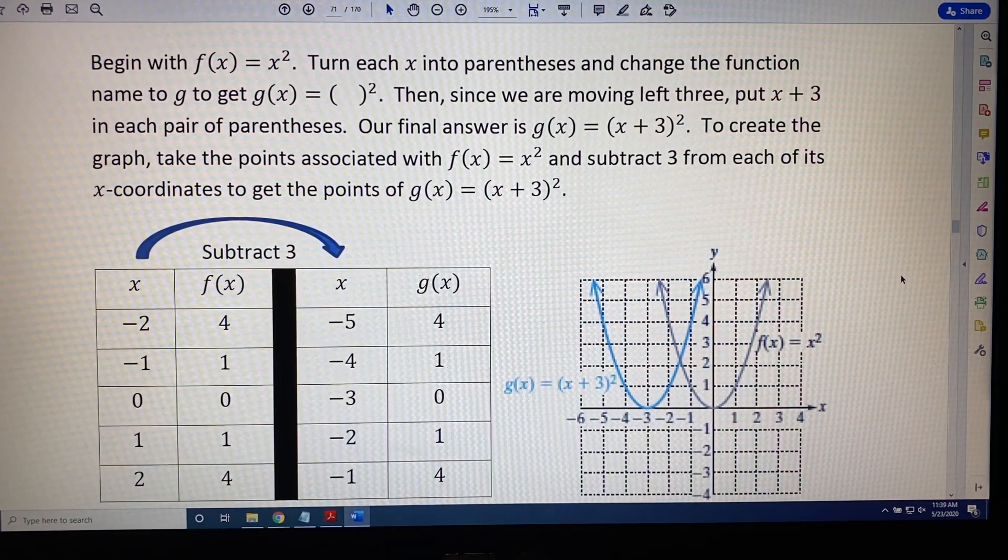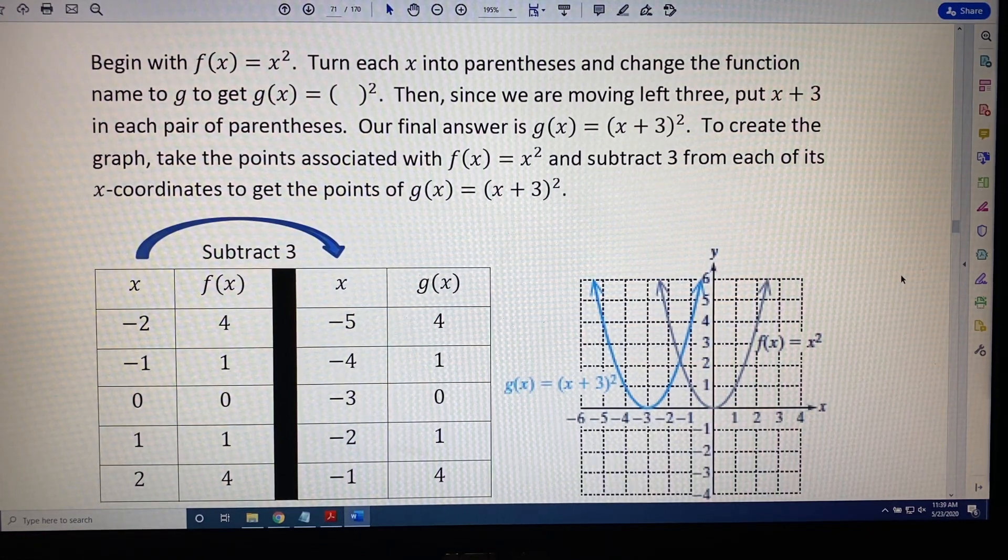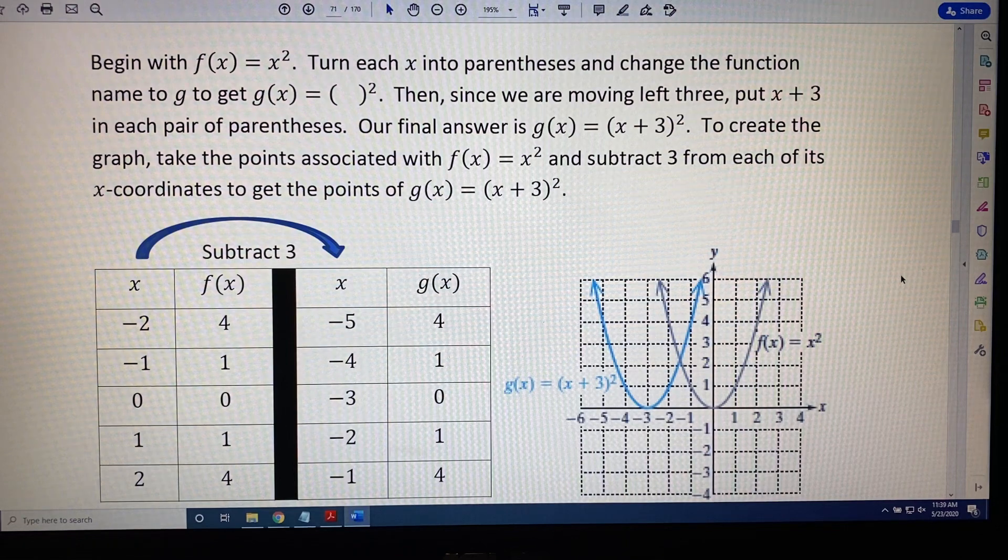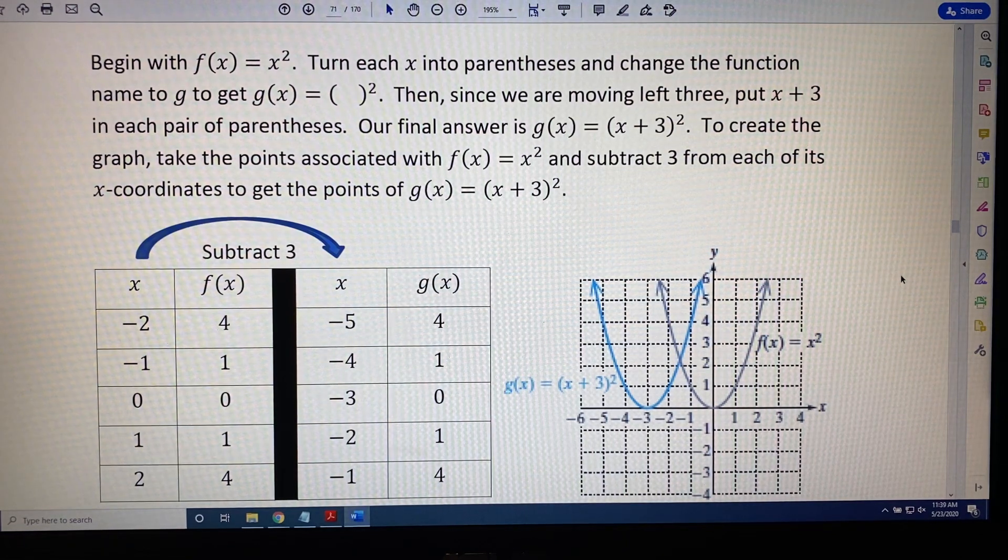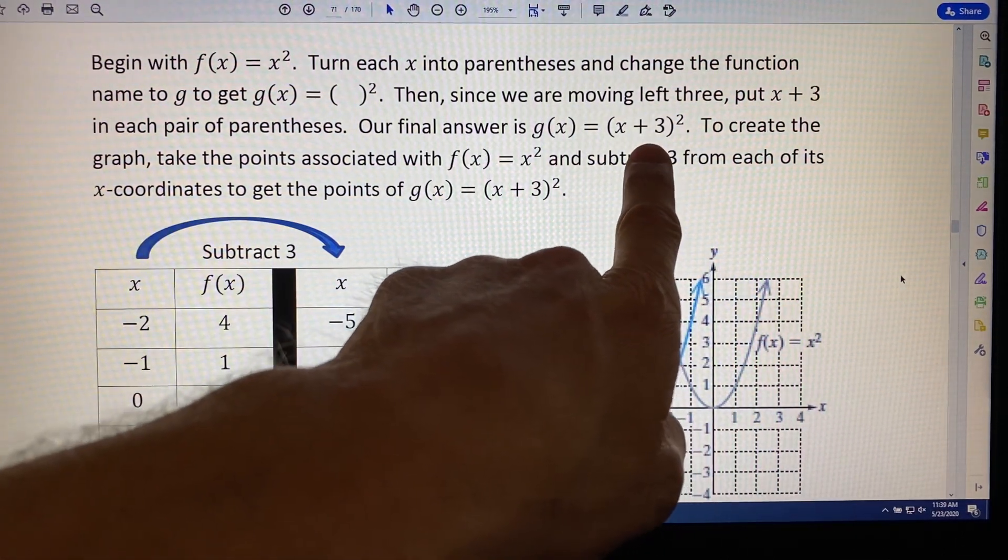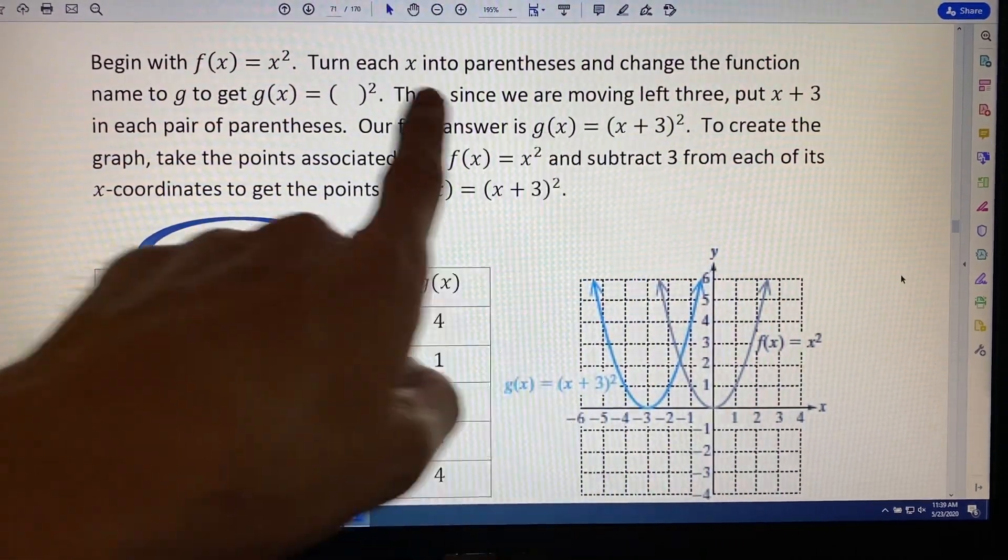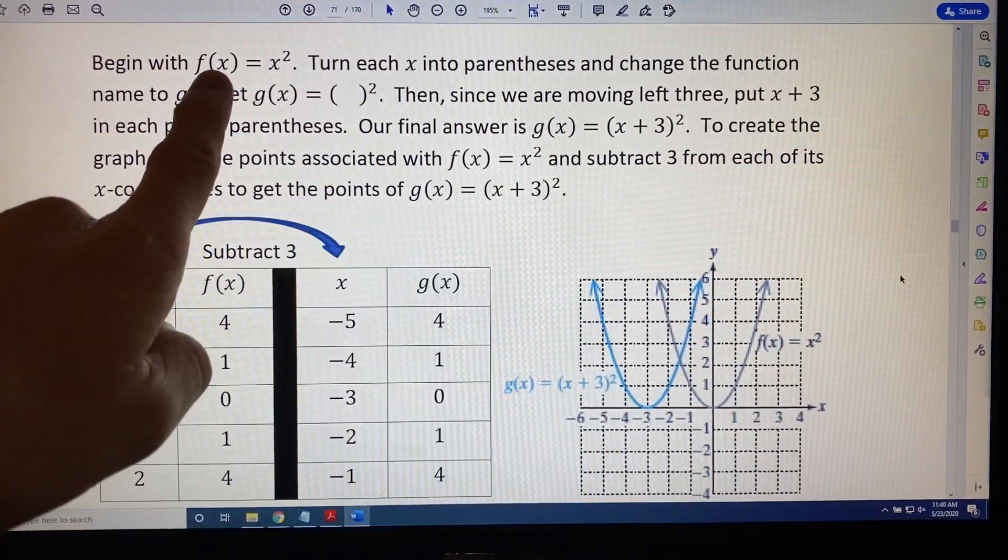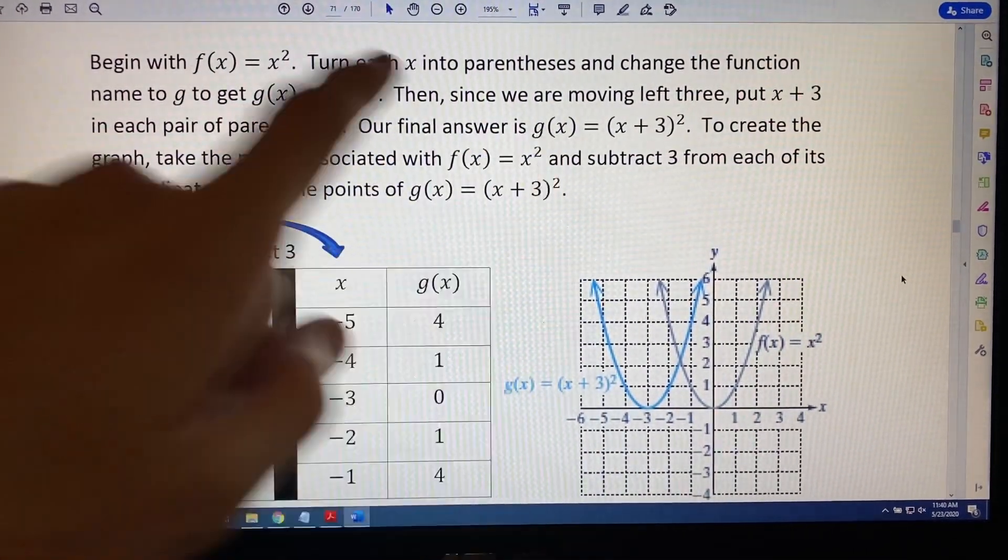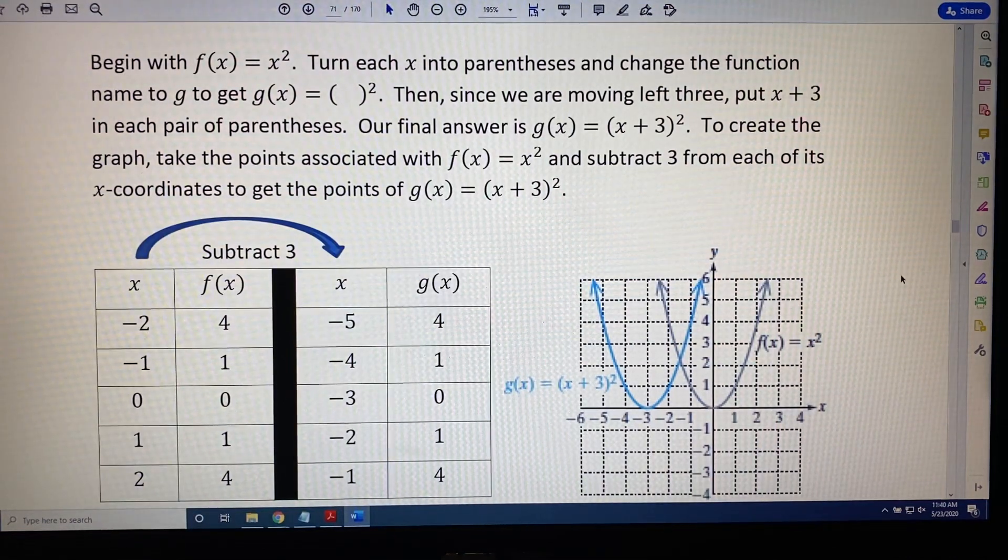Inside those parentheses, we should put x + 3 because we're moving to the left three spaces. This would create the following expression on the right-hand side: (x + 3)². And because we now have a new function, we've changed the name from f to g.